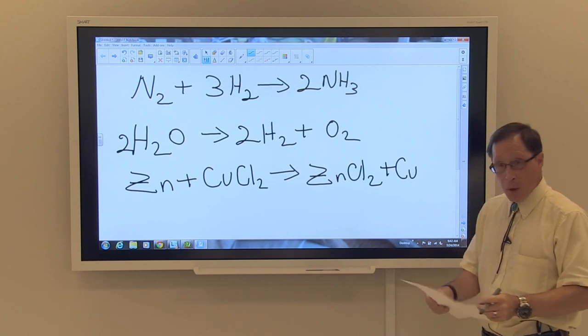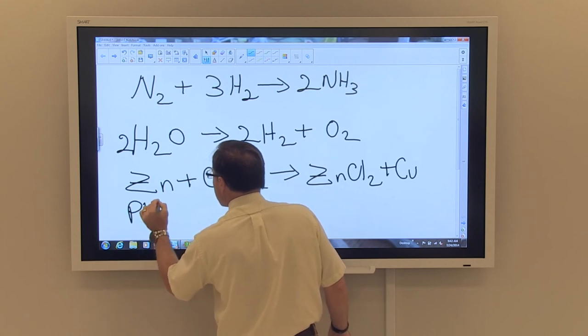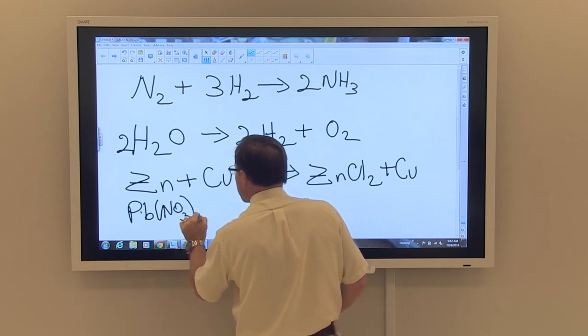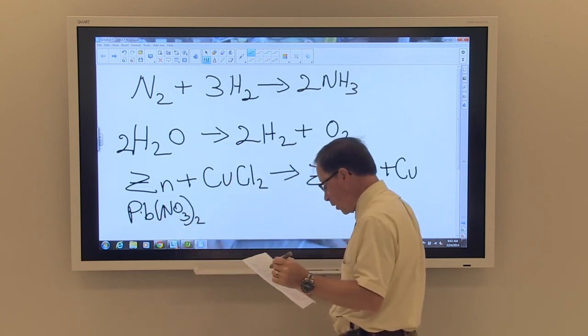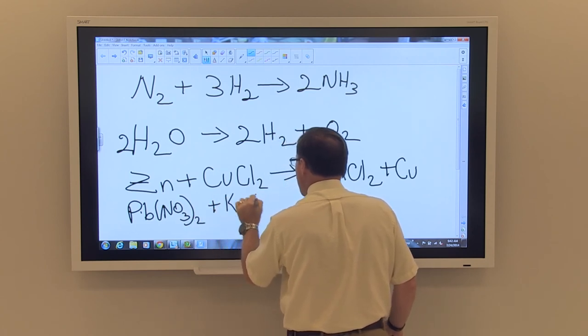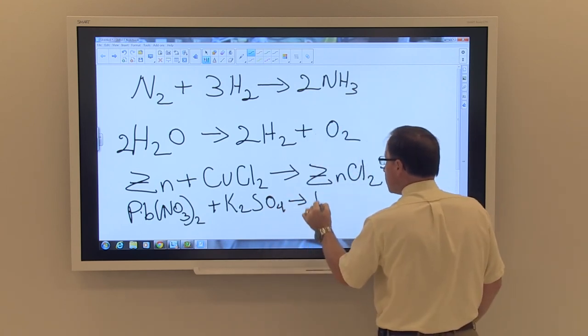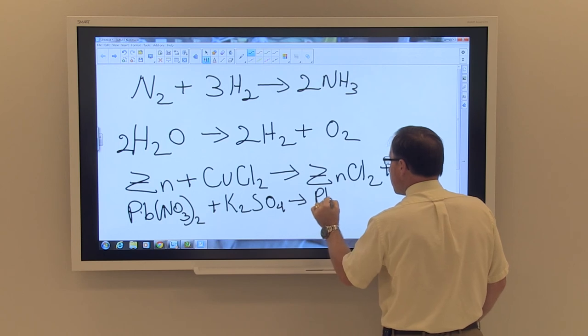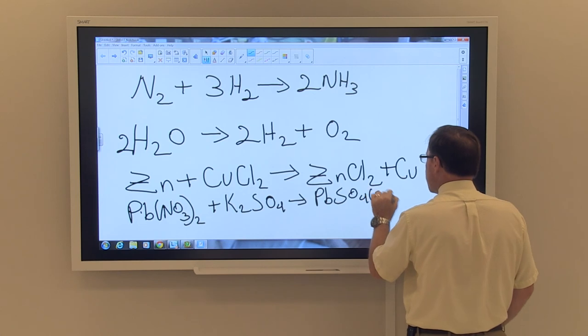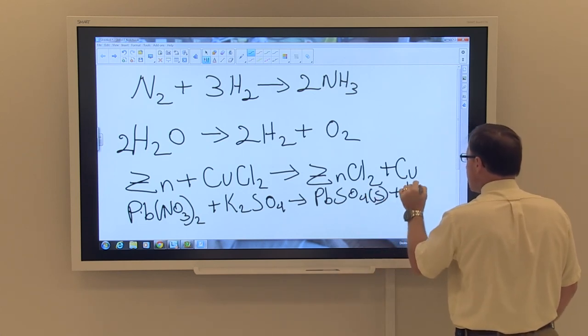A double displacement reaction would be lead nitrate plus potassium sulfate giving lead sulfate, and this lead sulfate will be a solid, and potassium nitrate.